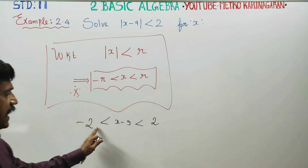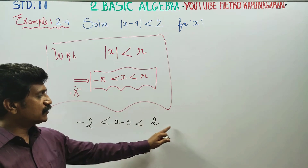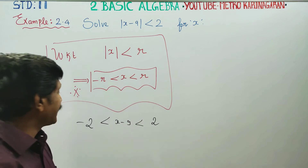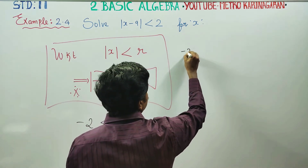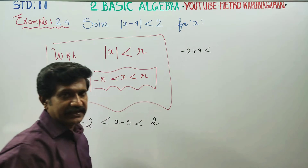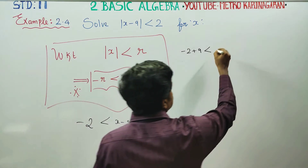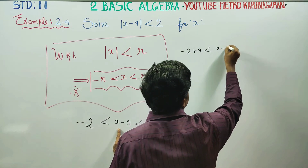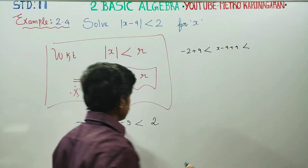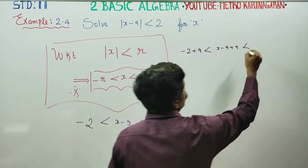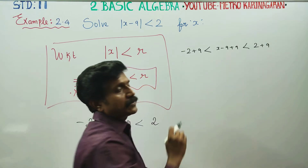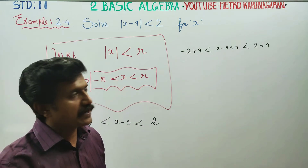Just add 9 to all the terms in the inequality: minus 2 plus 9 less than x minus 9 plus 9 less than 2 plus 9. When you add a number to all parts of an inequality, the inequality sign is unchanged.